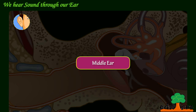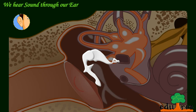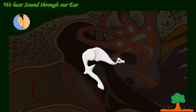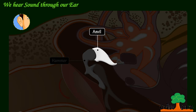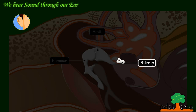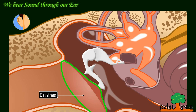Let's learn about the middle ear. Your middle ear contains three tiny bones called ossicles. These are the hammer, anvil, and stirrup. These are joined together and attached to the eardrum.